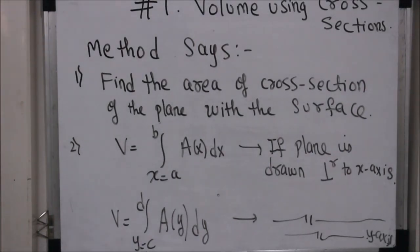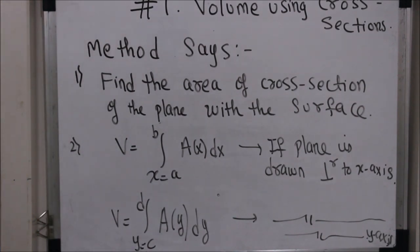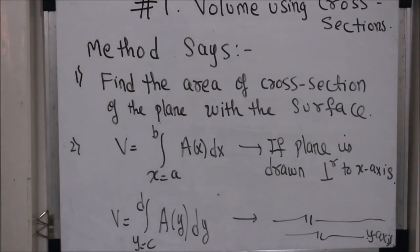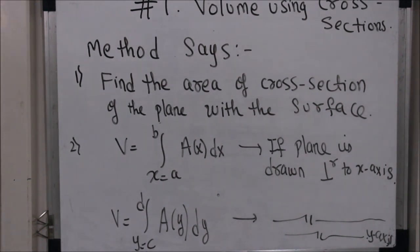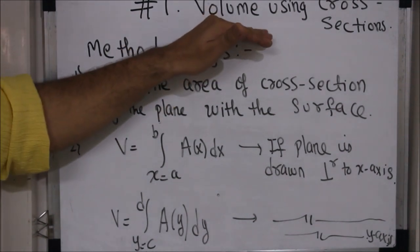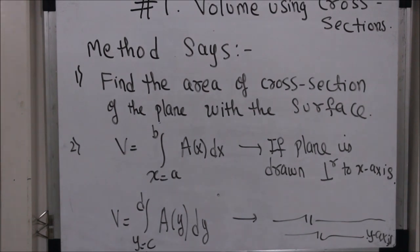Today we are going to talk about how to find volume using cross sections. Many times when you encounter problems, you might not know the surface, but you will know the cross section of that surface. If you know the cross section, the question is how do you find the volume. This method is very useful in such scenarios.